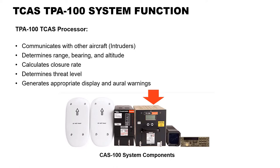When TCAS predicts that certain safe boundaries may be violated, it issues a Traffic Advisory (TA) to alert the crew that closing traffic is in the vicinity. If the intruder continues to close, TCAS issues a Resolution Advisory (RA) to obtain or maintain safe vertical separation between your aircraft and the intruder. TCAS then generates appropriate display and oral warnings.